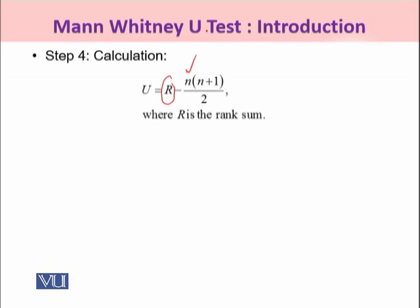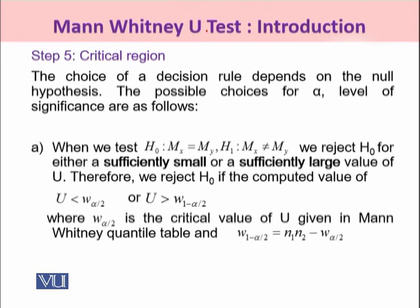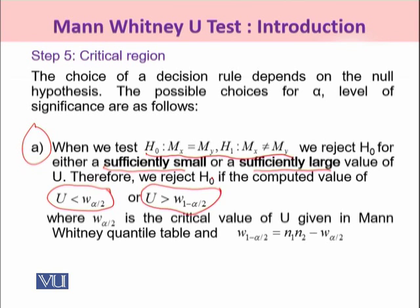The critical region is designed depending on whether your test is two-tailed or one-tailed. For the two-tailed test — testing H₀: MX = MY against the alternative that they are not equal — we reject H₀ for either a sufficiently small or sufficiently large value of U. Specifically, reject H₀ when U < W(α/2) or U > W(1 − α/2), where W(α/2) is obtained from the Mann-Whitney quantile table, and W(1 − α/2) = N₁ · N₂ − W(α/2).